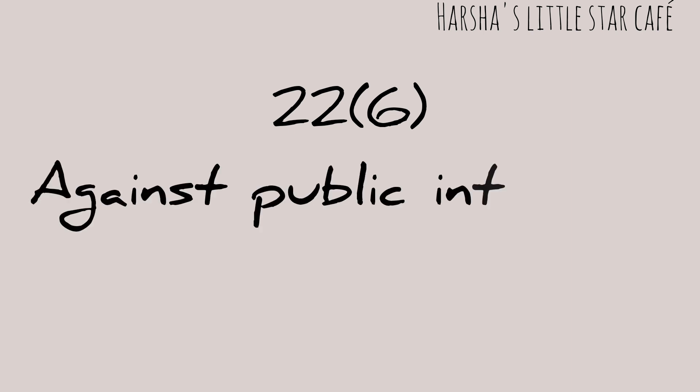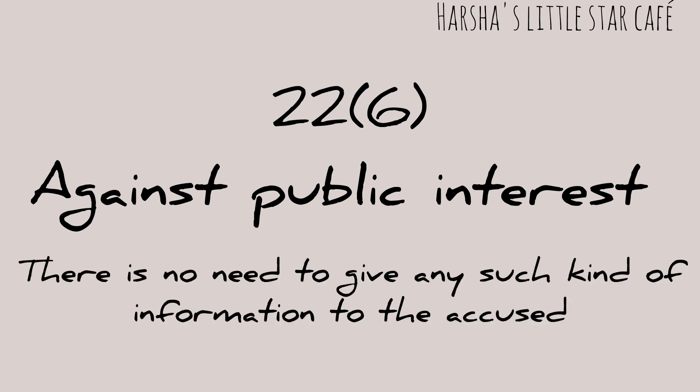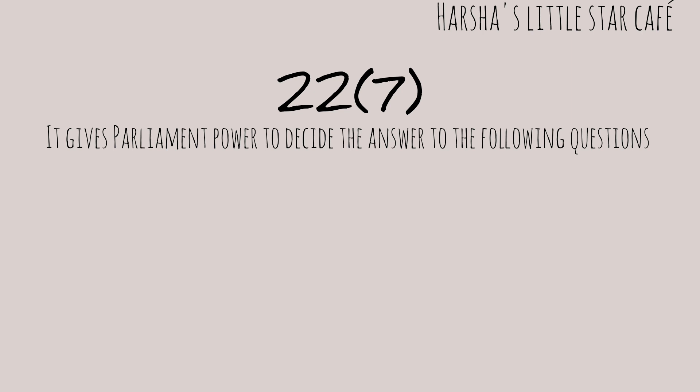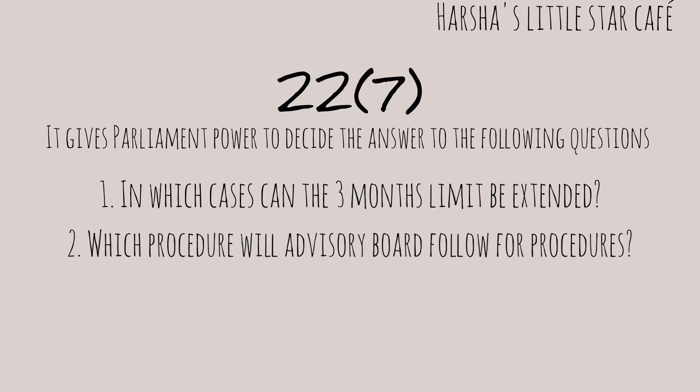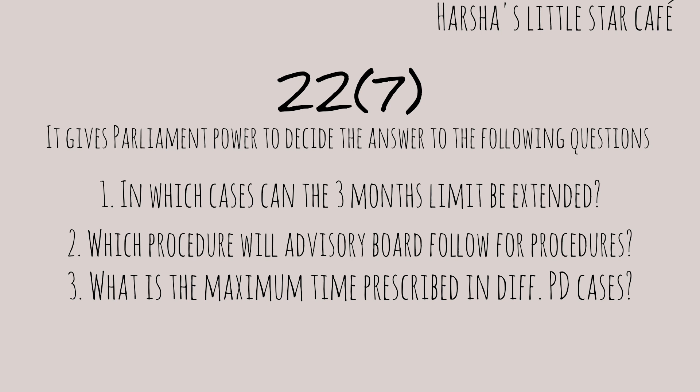However, if the information supposed to be told to the accused may compromise public interest, Article 22 clause 6 provides that nothing in clause 5 shall require the authority to disclose facts which such authority considers to be against the public interest to disclose. So there is no obligation to provide such information to the accused. Article 22 clause 7 gives parliament the power to decide: first, in which cases can the three-month limit be extended; second, which procedure the advisory board will follow; and third, what is the maximum time prescribed in different preventive detention cases.